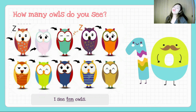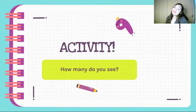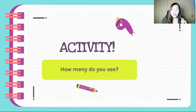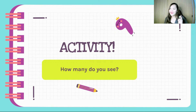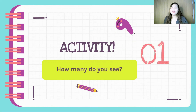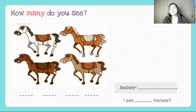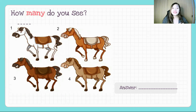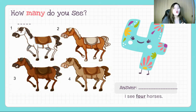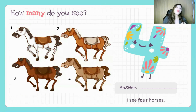Now let's try to do a simple activity. It's activity time! I titled this activity 'How Many Do You See?' You're going to count how many objects or animals you see on the screen. Let's start. I'm going to give you time — how many do you see? Are you ready? Let's reveal the answer. The answer is four, or I see four.